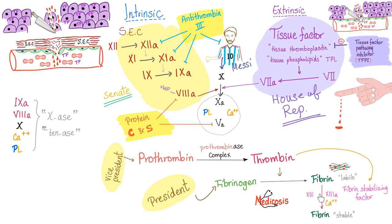These are the steps of the coagulation cascade. Remember that warfarin inhibits both pathways, but mainly the extrinsic pathway. Heparin inhibits both, mainly the intrinsic pathway. Hemophilia A is a problem with factor VIII, hemophilia B is factor IX, hemophilia C is factor XI. Vitamin K deficiency will lead to problems with factor II, VII, IX, and X, as well as protein C, protein S, and even protein Z.